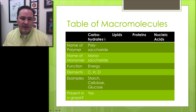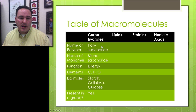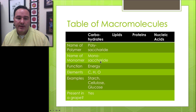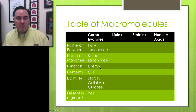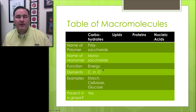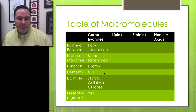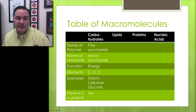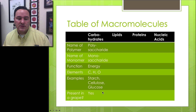We can now fill out the carbohydrates column: the name of the polymer is polysaccharide, the monomer is monosaccharide. The function is mostly energy, but also roughage in the case of cellulose. It's made up of carbon, hydrogen, and oxygen. Examples include starch, cellulose, and glucose. Is it present in a grape? Yes, it is.